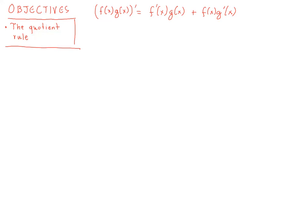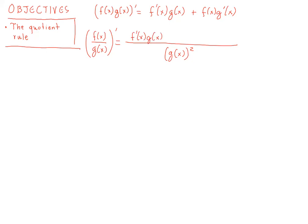We will see that there are some similarities, but there is a very important difference. On the bottom, we have the derivative of the denominator squared. On the top, we have something very similar to what we have in the product rule, with the exception that the sign between the two terms is negative. This makes it very important to start with the derivative of the numerator times the denominator. And that's the quotient rule.